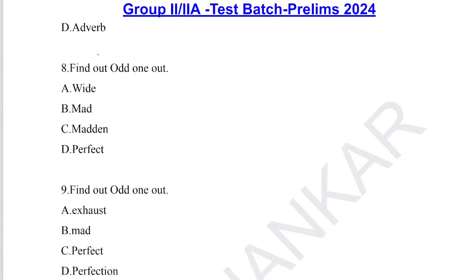Question number 8: odd one out — parts of speech. The options include 'wide' (adjective), 'mad' (adjective), 'perfect' (adjective), and 'madden' (verb). So option C — madden — is the correct answer for question number 8, as it is a verb while the rest are adjectives.